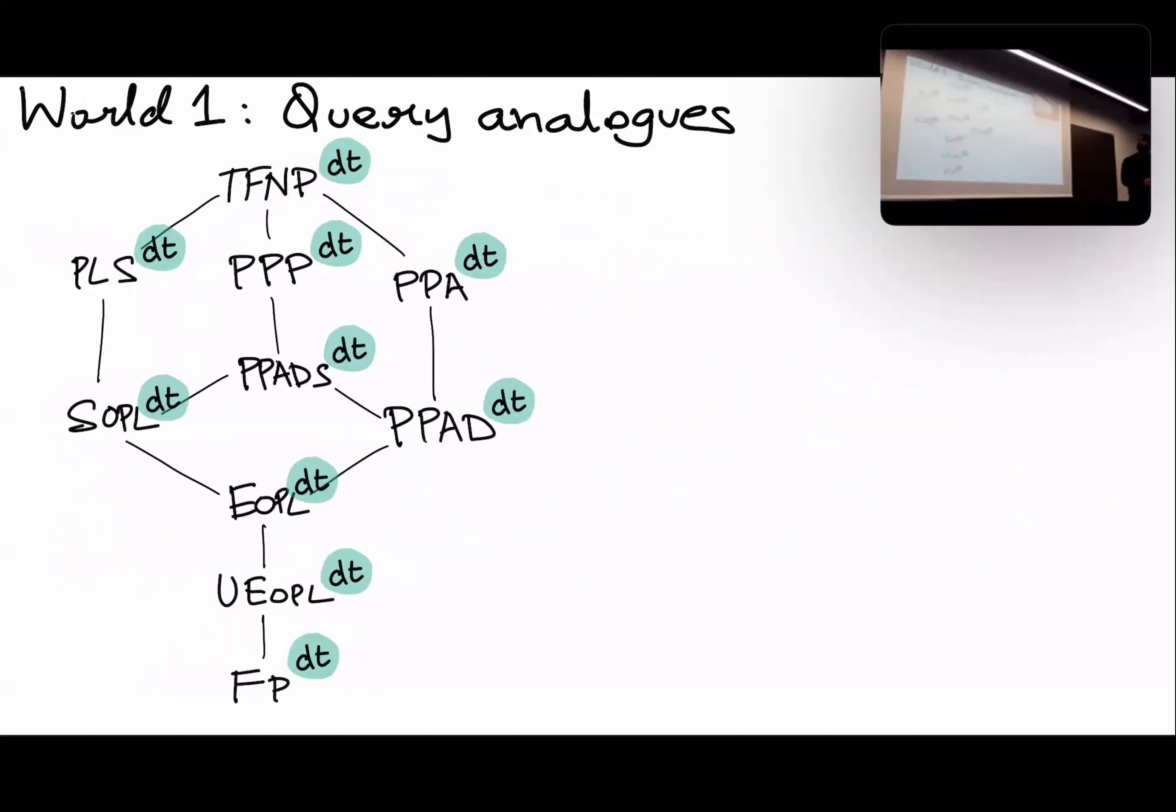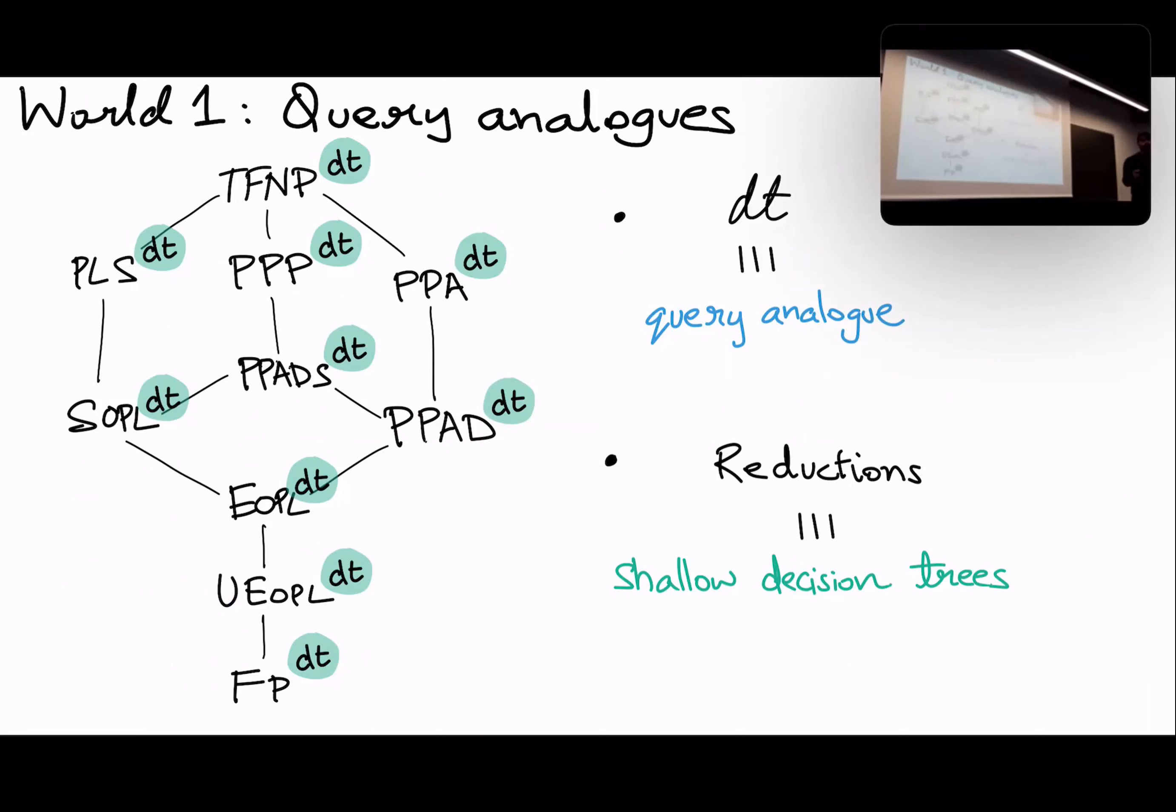So that's the message of this talk. That there is a bridge between proof complexity and TFNP, which we exploit to get these results. Let's see what the bridge is more carefully. So, first we will look at these query analogs of TFNP classes. And what I mean by this is that the notion of reductions in these classes are now shallow decision trees. By shallow, I mean polylogarithmic depth.